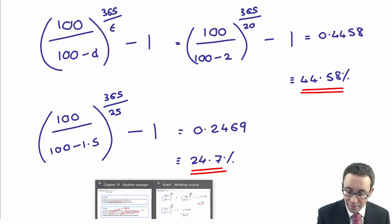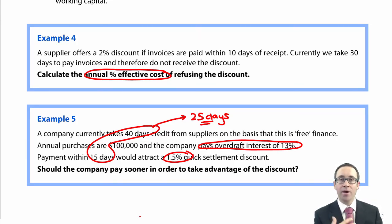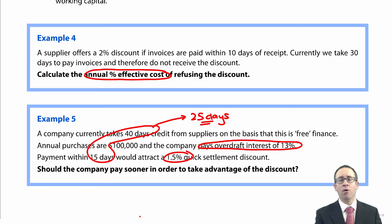So 24.7% versus 13% — it is cheaper with the overdraft than with the discount. I would not pay any sooner. That's it for this section. There's a little extra reading for you on overtrading in your own time — no numerical example, just book work. If you get stuck, feel free to ask on the forum. That's it from this overall part of the syllabus on working capital management. Thank you for joining us.